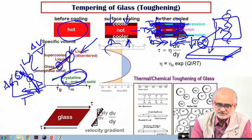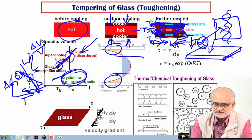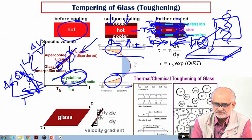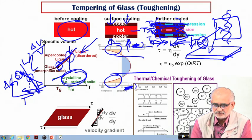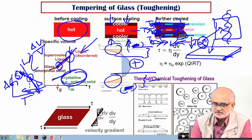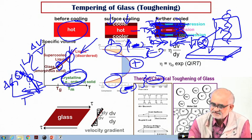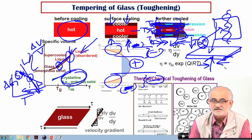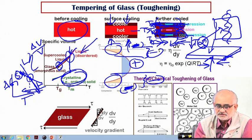When the core subsequently tries to cool and contract, the surface is already rigid. The core's tendency to shrink is opposed by the hard surface layer. Since most solids have a positive coefficient of thermal expansion, thermal contraction of the core is resisted by the already solidified surface. As a result, the surface develops residual compressive stresses, while the core experiences tensile stresses. When a projectile hits the surface of the glass, it must first overcome these residual compressive stresses before a crack can propagate — making the glass act much tougher.